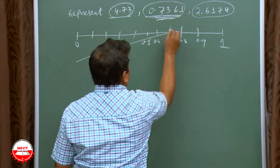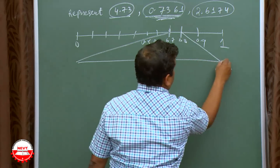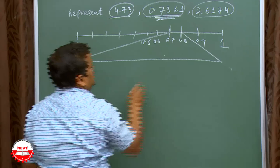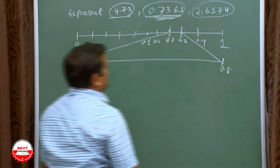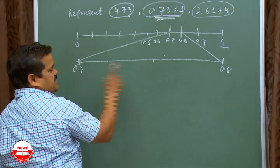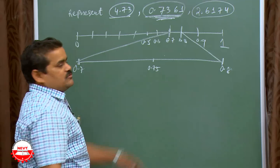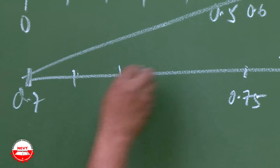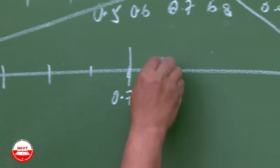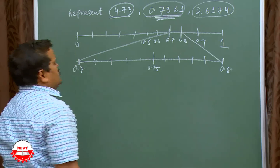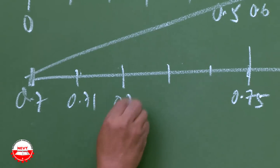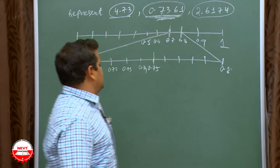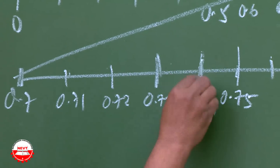So this is 0.7 and this is 0.8. The exact middle part is 0.75. You need 0.73, which is on this side. Divide it into 4 equal parts: 0.71, 0.72, 0.73, 0.74. Your aim is to get 0.73, so 0.73 and 0.74 — these two you have to magnify.